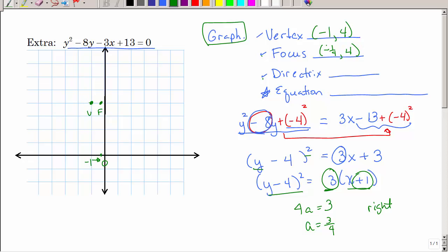What's my directrix? Well, I'm going to go 3 fourths that way and draw my vertical line. So remember, it's a vertical line. So, x equals to what value? That's negative 1, and that's negative 2. It's almost negative 2. It's negative 1 and 3 fourths, or negative 7 fourths.